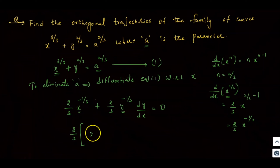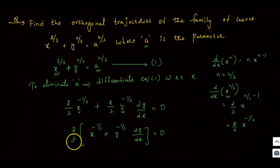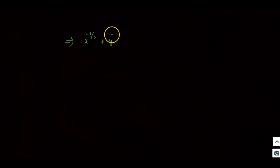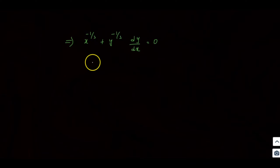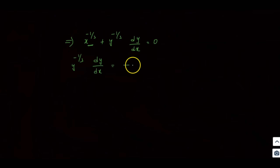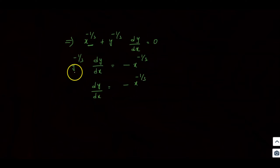Taking 2/3 as common: (2/3)·[x^(-1/3) + y^(-1/3)·(dy/dx)] = 0. Simplifying, y^(-1/3)·(dy/dx) = -x^(-1/3), so the right-hand side becomes minus x^(-1/3).